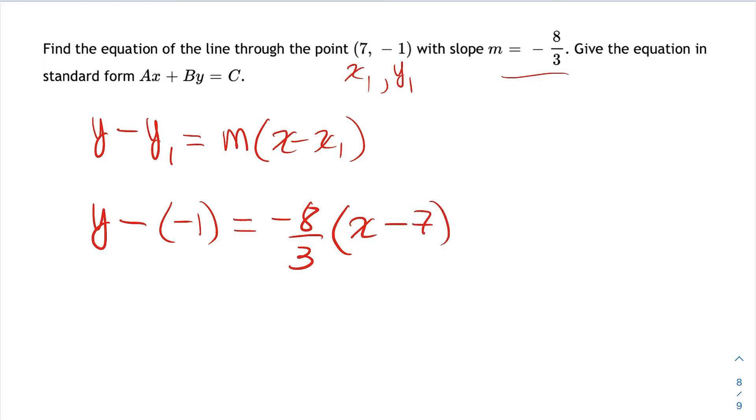So y minus negative 1 actually turns into y plus 1 equals -8/3 times x minus 7.